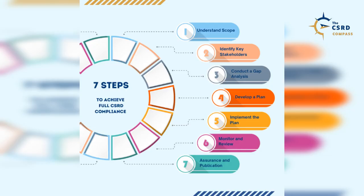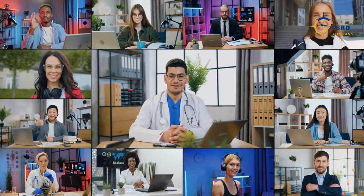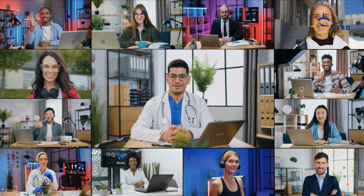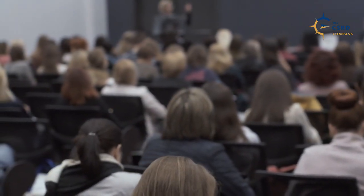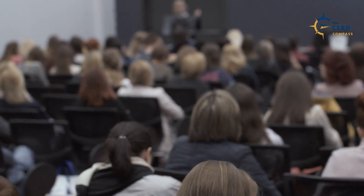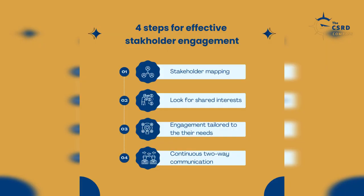Step 2: Identify the Key Stakeholders. Stakeholders encompass individuals or groups with the potential to influence or be impacted by a company's activities. It is crucial to acknowledge that certain stakeholders can fall into both categories, as their interests are affected by the company's activities while also utilizing sustainability statements for decision-making. To effectively demonstrate compliance with the CSRD and ESRS, companies must recognize the significant role of stakeholder engagement in their double materiality assessment process and overall sustainability reporting endeavors.